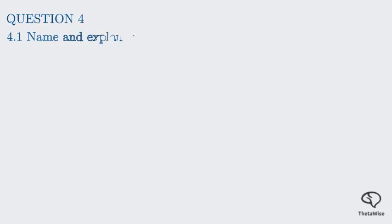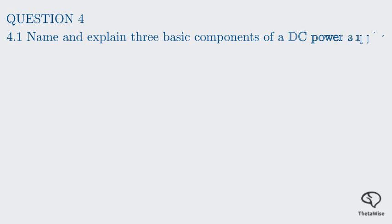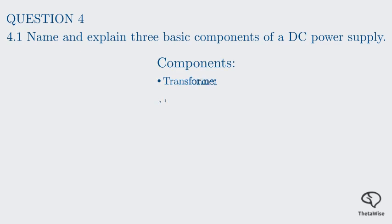Our first question, labeled 4.1, asks us to name and explain three basic components of a DC power supply. This means we need to understand what pieces are inside a power supply and what job each piece does. The goal is to break down a power supply into its most fundamental parts and explain their function. They are the transformer, the rectifier, and the filter.